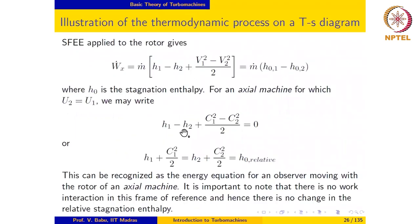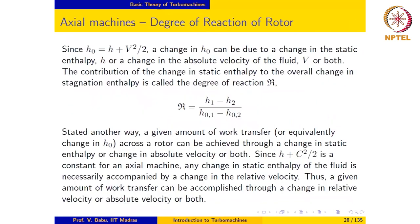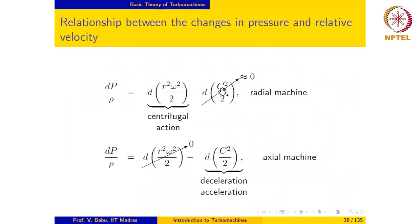In addition, in the case of an axial machine, any change in specific enthalpy of the fluid across the rotor passage always results in a change in the relative velocity of the fluid in the blade passage. Furthermore, in the case of an axial or a radial machine, any change in relative velocity in the rotor passage determines the change in pressure along the streamline which passes through the rotor blade passage.